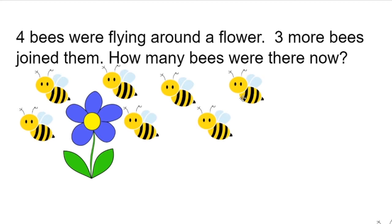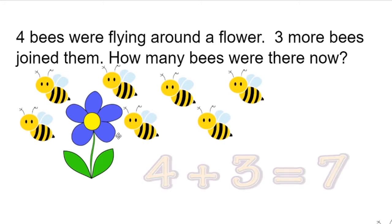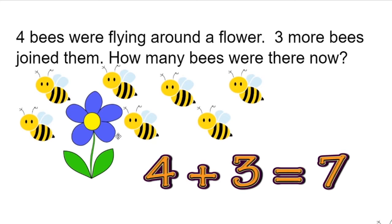Seven bees all together. We used a picture of the bees to see how many bees are all together, and we solved the problem that way. The math sentence would be four plus three equals seven.